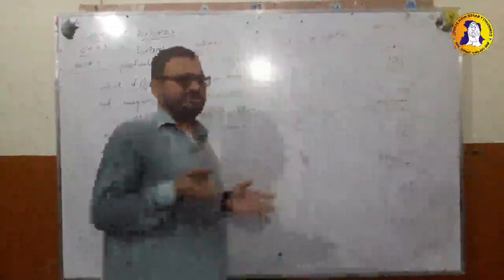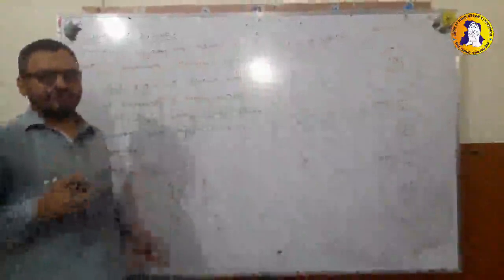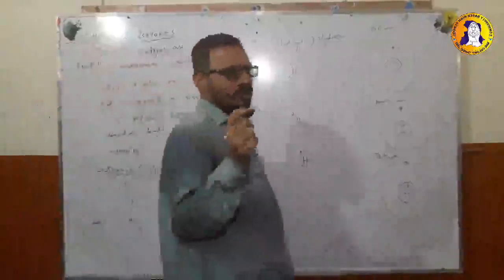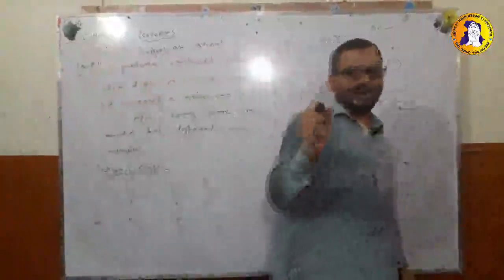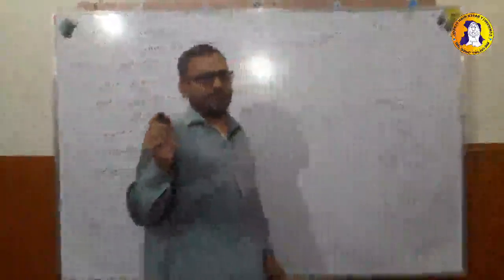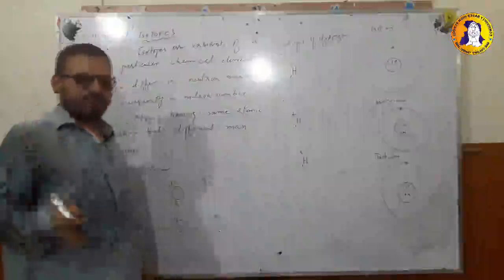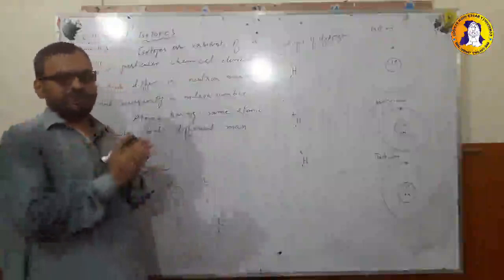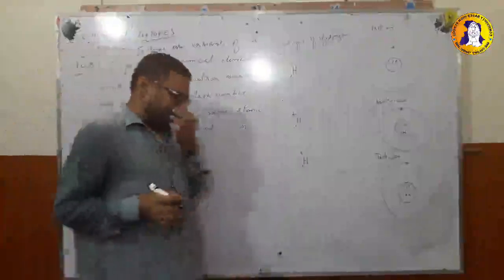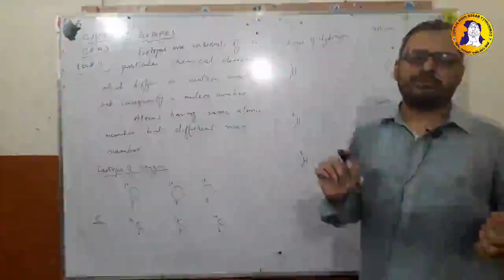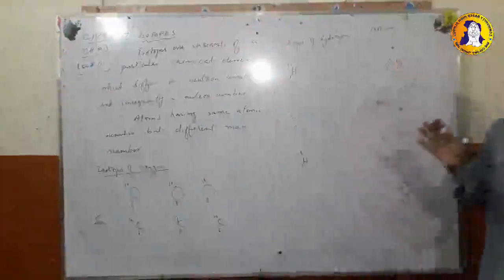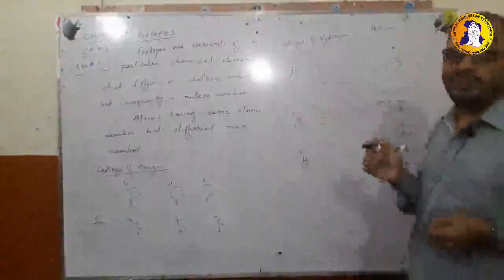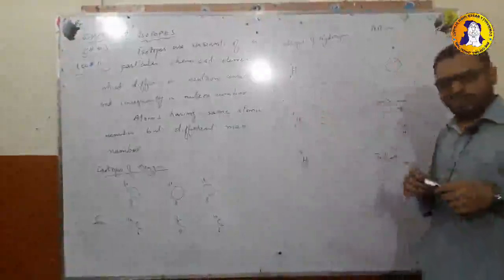In our previous lecture we discussed what atomic number and mass number mean. The atomic number is the number of electrons or protons in an atom. It is a unique number assigned to every element. The mass number is the sum of protons and neutrons — it is also called the nucleon number.